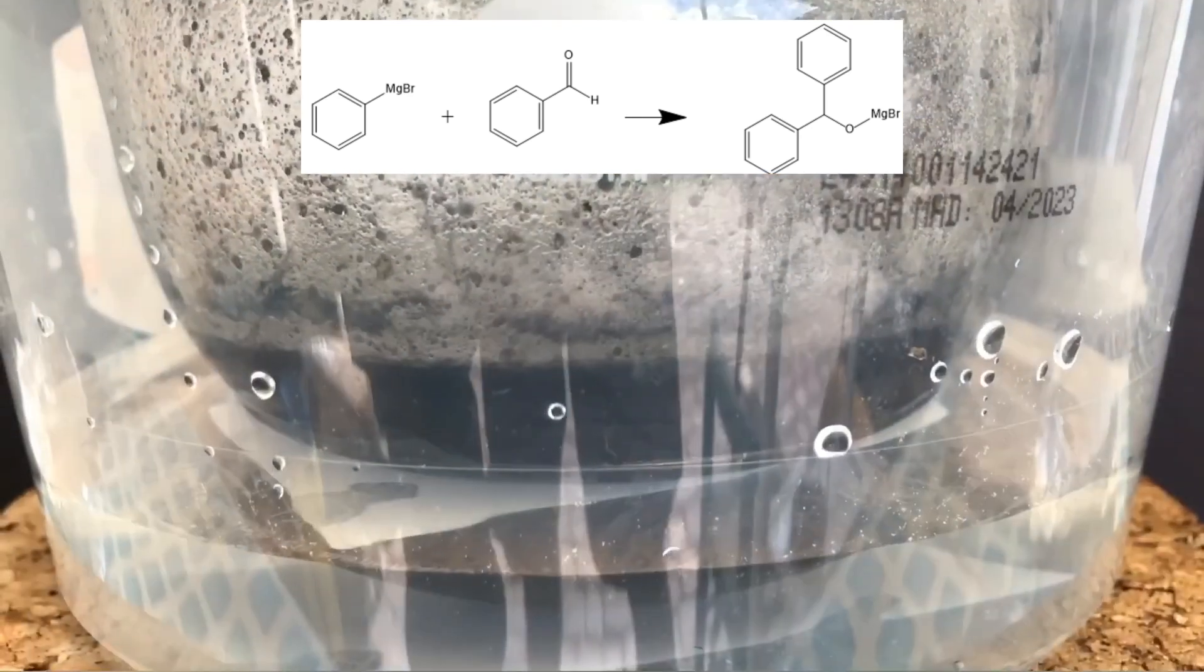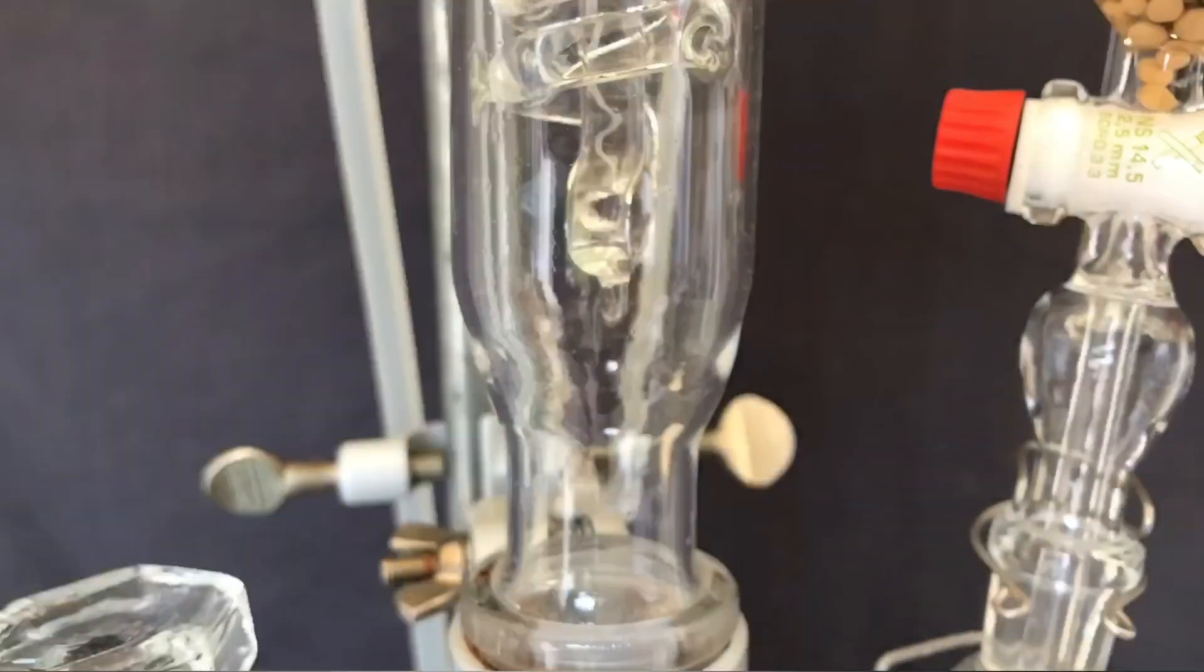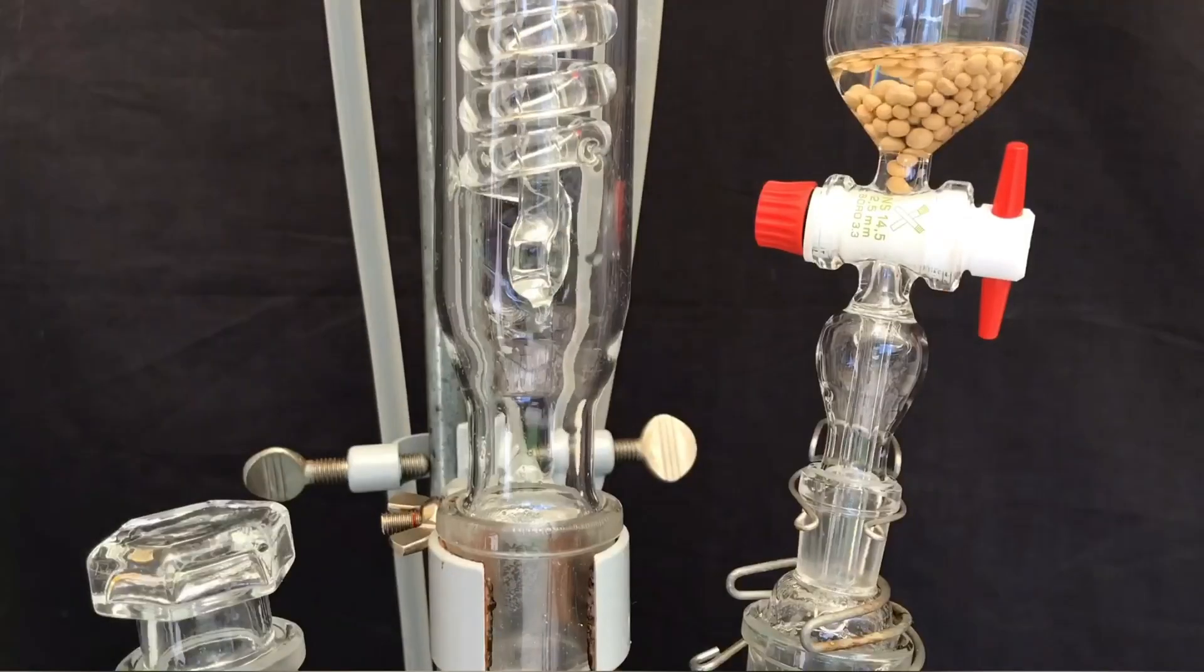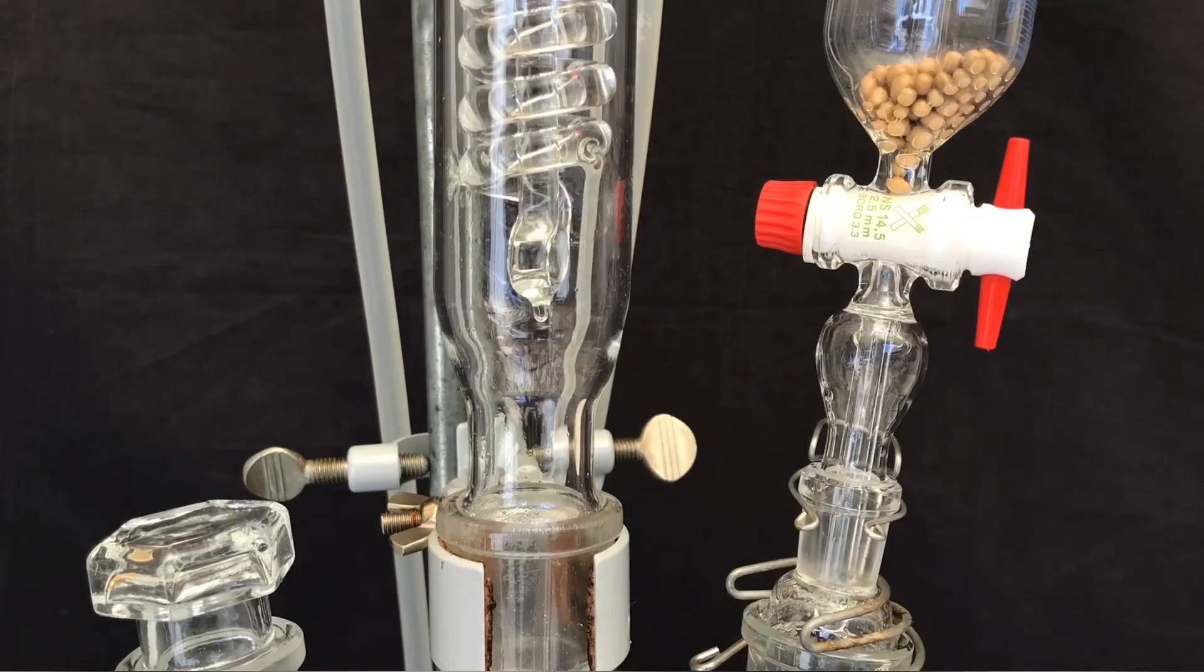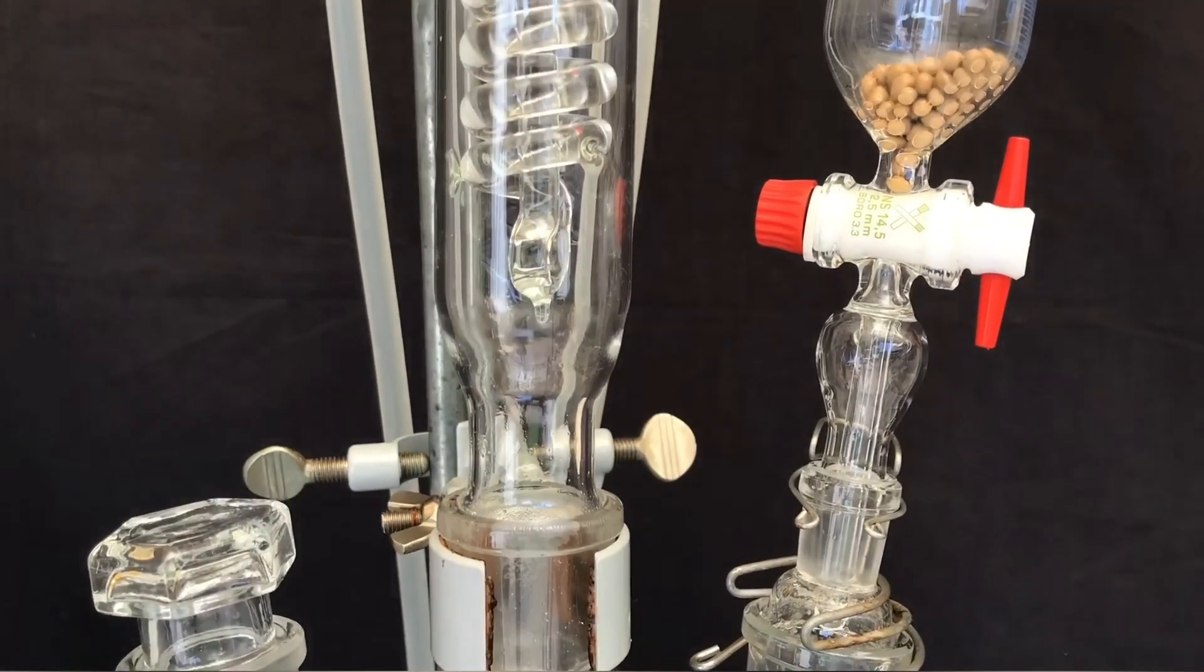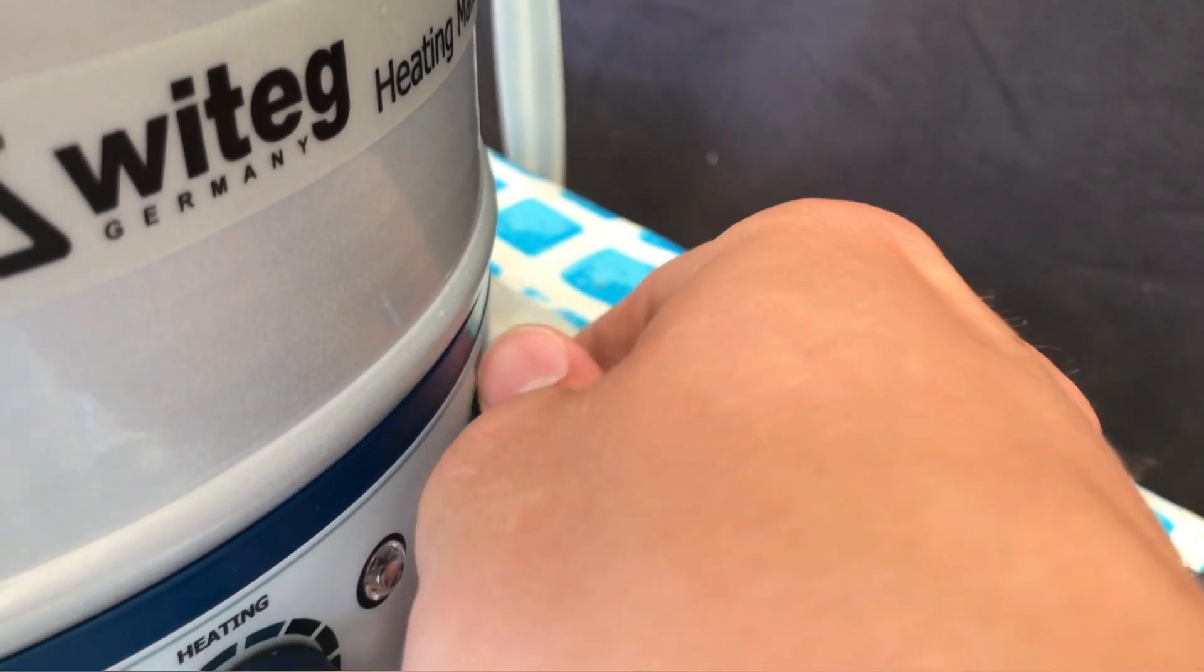The Grignard reagent we prepared before now reacts with the benzaldehyde to form a new Grignard reagent. As the reaction before, this one is also extremely exothermic, meaning that the ether will start to boil. If the benzaldehyde is added too quickly, the ether might boil over. Once all the benzaldehyde has been added, we set up for reflux to drive the reaction to completion.